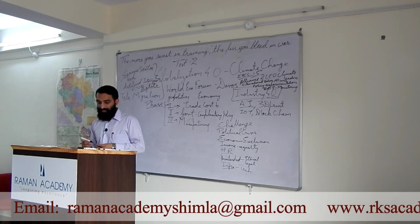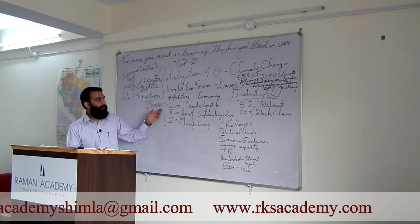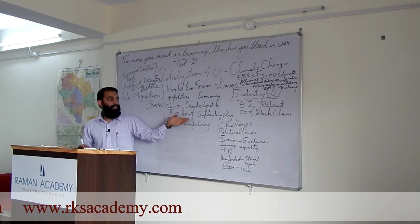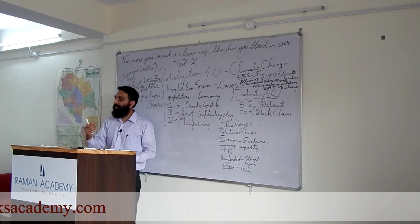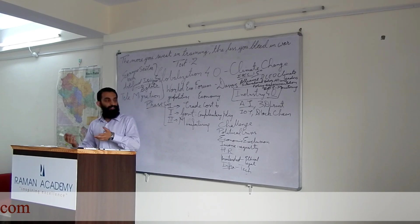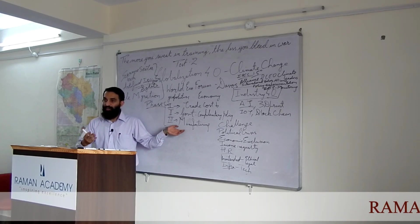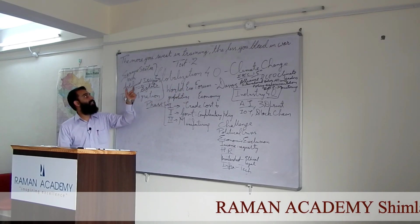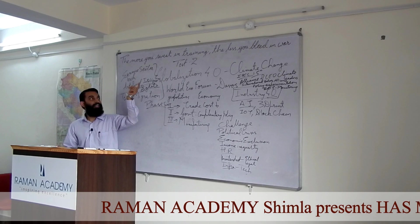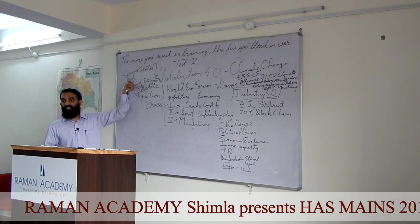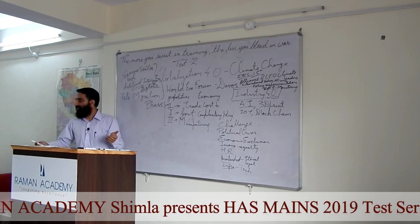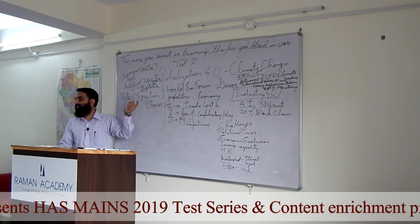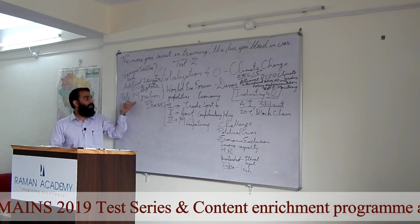Globalization के phases: पहला phase है जब trade cost कम हो रही है, trade बढ़ रहा है। दूसरा, government complementary policies बना रही है और उसके साथ globalization बढ़ रही थी। तीसरा, manufacturing बढ़ी। और अभी globalization 4.0 में service sector important है और technology बढ़ रही है — artificial intelligence जैसी technology आ रही है।